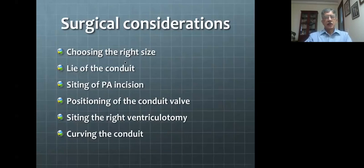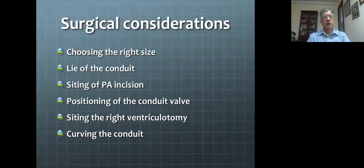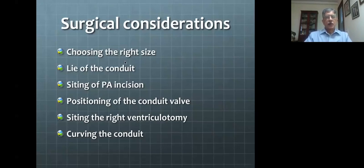There are a few surgical considerations which are important. Conduit placement is all about very fine surgical details that improve conduit longevity and reduce postoperative complications. It is important to choose the right size. The lie of the conduit matters — whether it goes to the left or right of the aorta; the siting of the pulmonary artery incision; the positioning of the conduit valve relative to the pulmonary artery or right ventricular incision; the site and angulation of the right ventriculotomy; and how you curve the conduit.